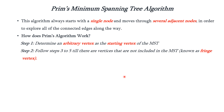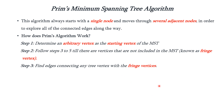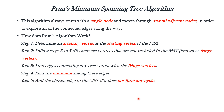The vertex which is not included in the MST is also known as a fringe vertex. Many fringe vertices can be connected to the tree vertex, so among these we have to find the vertex which has only the minimum edge. Once we find the minimum among the available edges, we have to add that chosen edge into the MST if it is not forming any cycle. If it forms a cycle we should not add it. Finally we have to return the MST and exit.